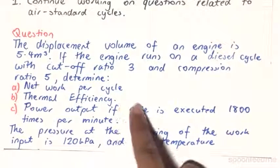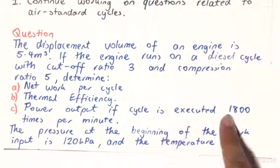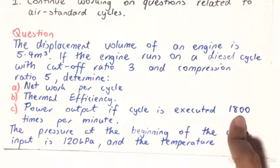determine a) the net work per cycle, b) the thermal efficiency, and c) the power output if the cycle is executed 1,800 times per minute.